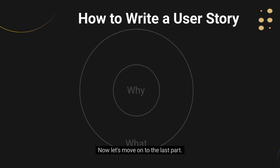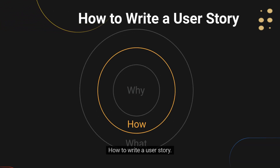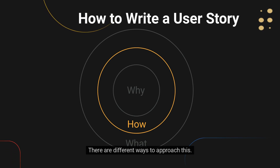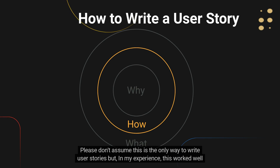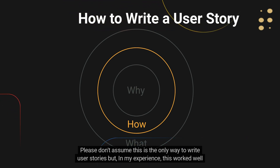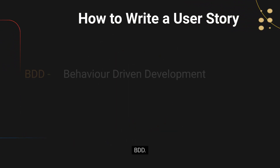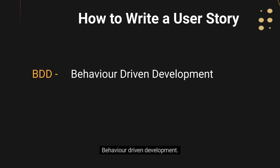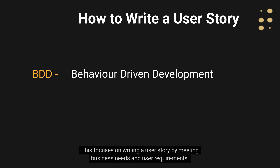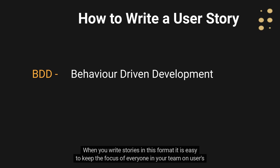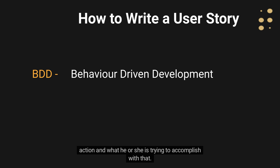Now let's move on to the last part: how to write a user story. There are different ways to approach this. Please don't assume this is the only way, but in my experience, this worked well with all teams. It's called BDD — behavior-driven development. This focuses on writing a user story by meeting business needs and user requirements. When you write stories in this format, it is easy to keep the focus of everyone in your team on the user's action and what he or she is trying to accomplish with that.